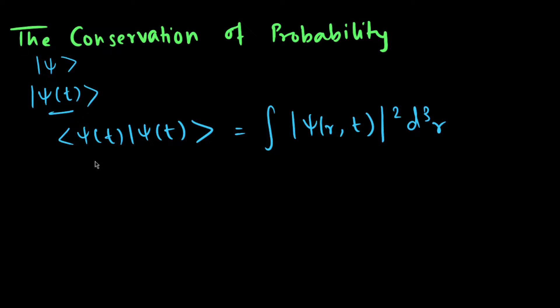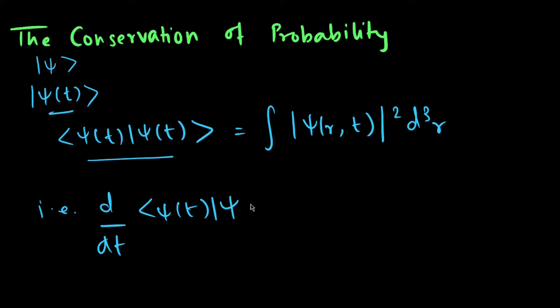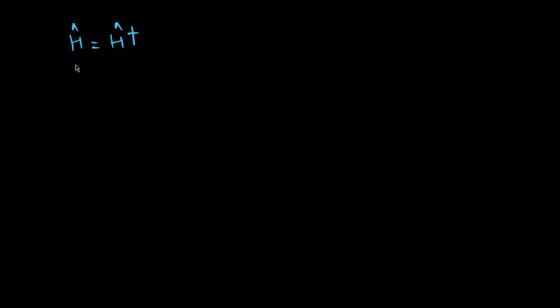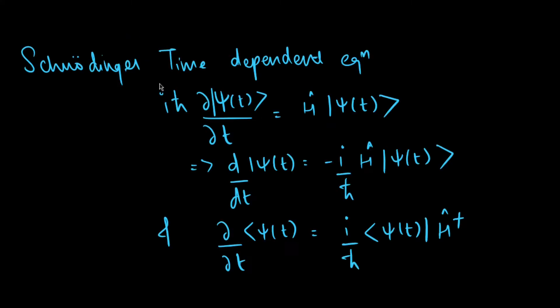To prove that the norm of ψ(t) is constant, we need to show that its time derivative is zero, that is, d/dt of ⟨ψ(t)|ψ(t)⟩ equals zero. In this video we will try to prove this. We know that the Hamiltonian operator is Hermitian, that is, Ĥ = Ĥ†. This is a very important result, and with the help of this we will prove that the time derivative of the norm of ψ(t) is zero.